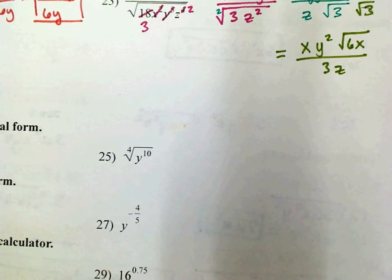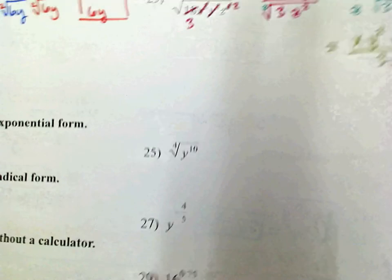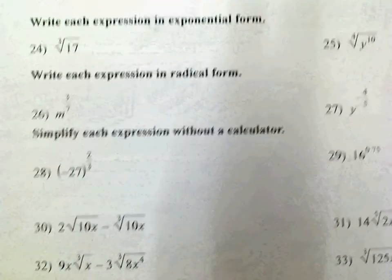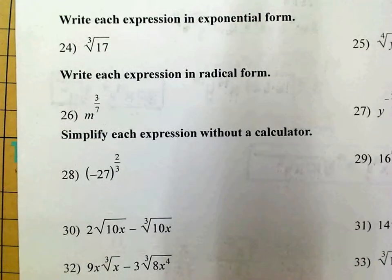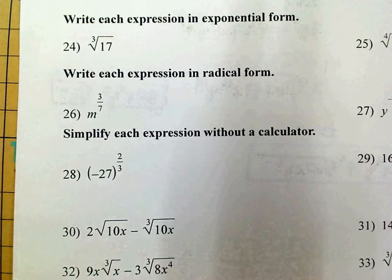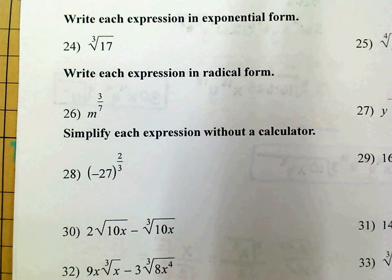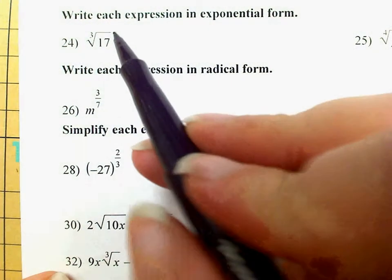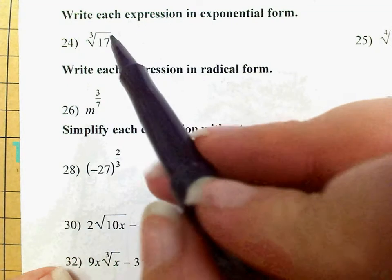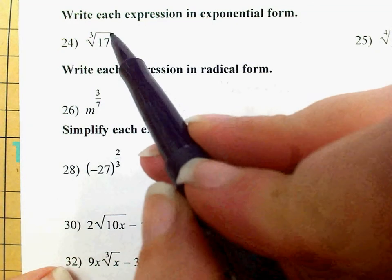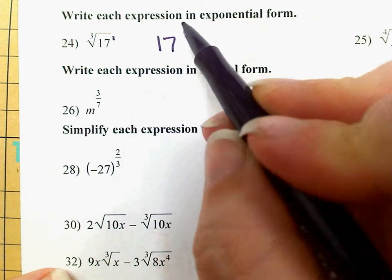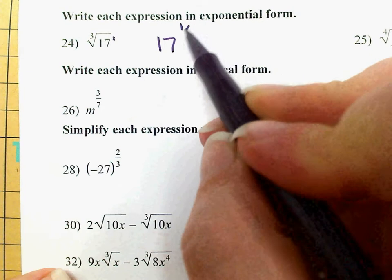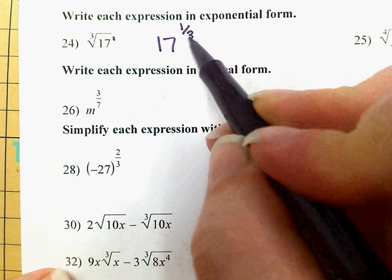On number 24, the cubed root of 17 — it says rewrite in exponential form. I need to think of power and root. The root is the denominator, and 17 is to the first power. If it's not written, it's a 1, so 17 to the 1 over 3, which is 1 third.